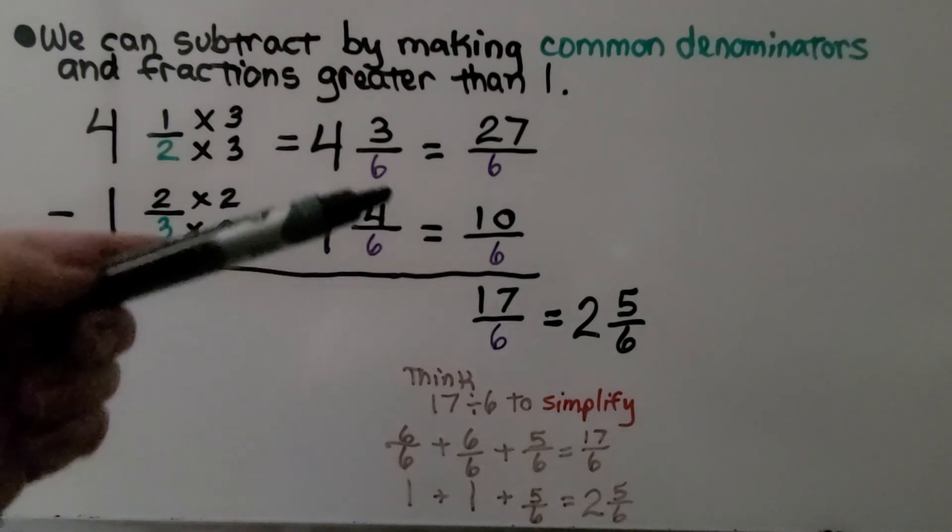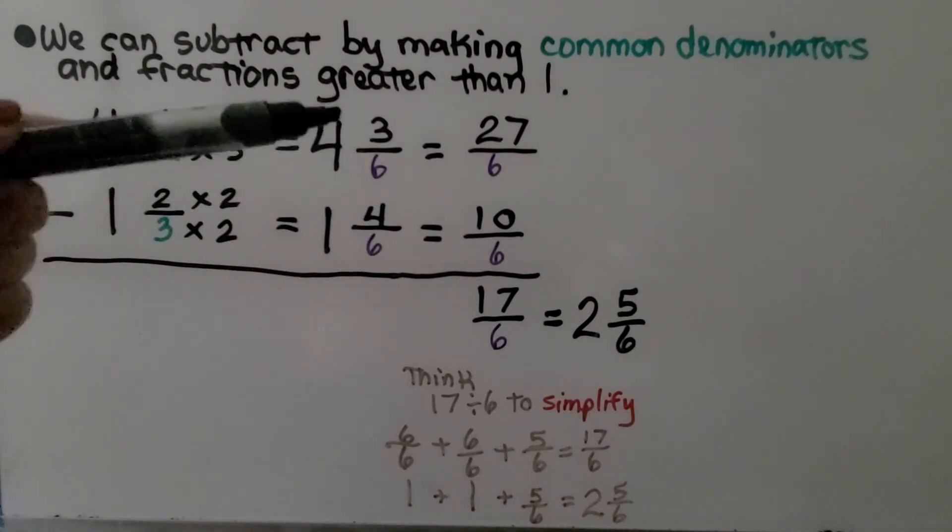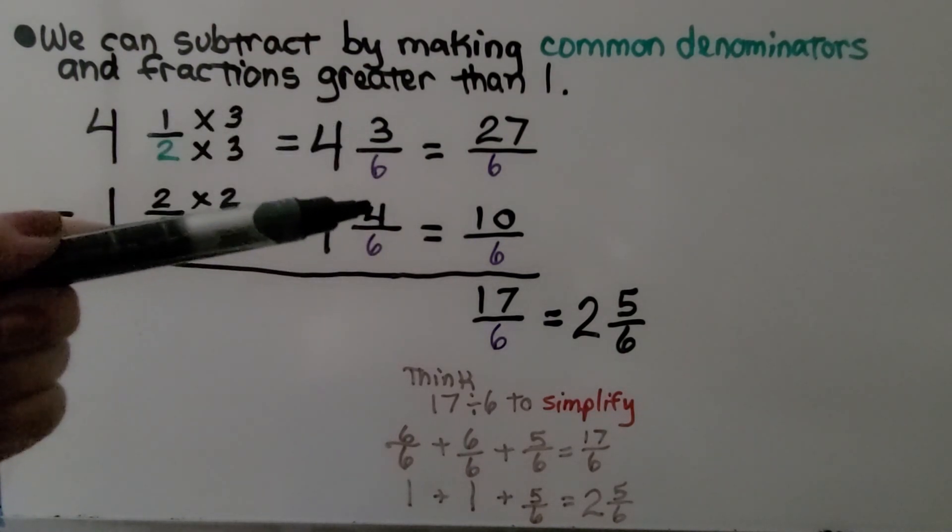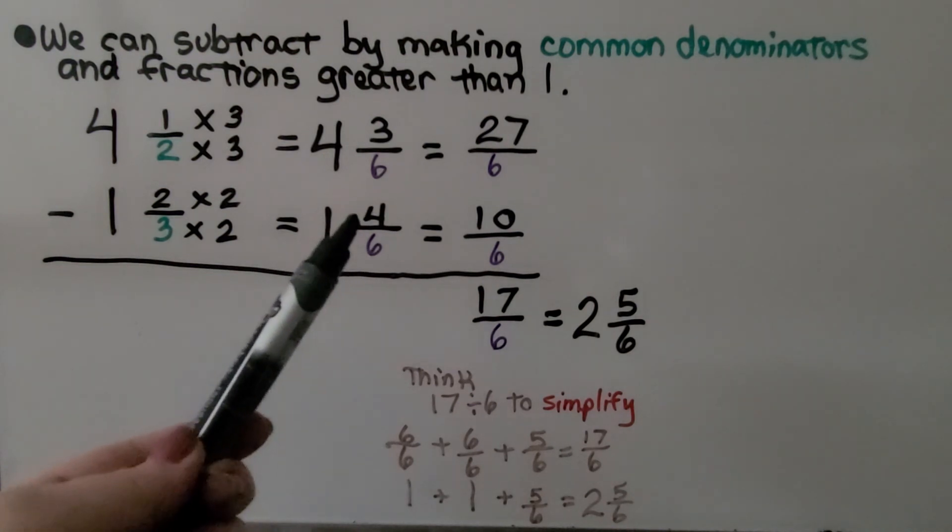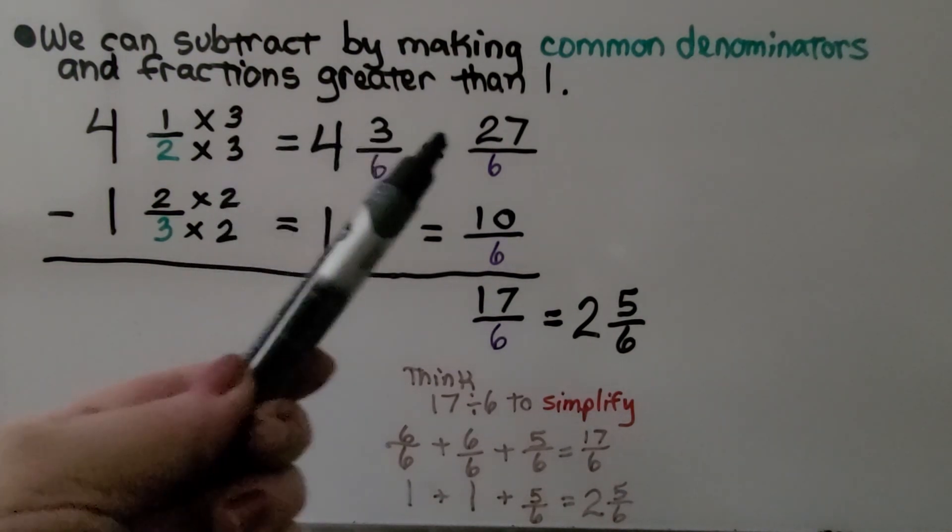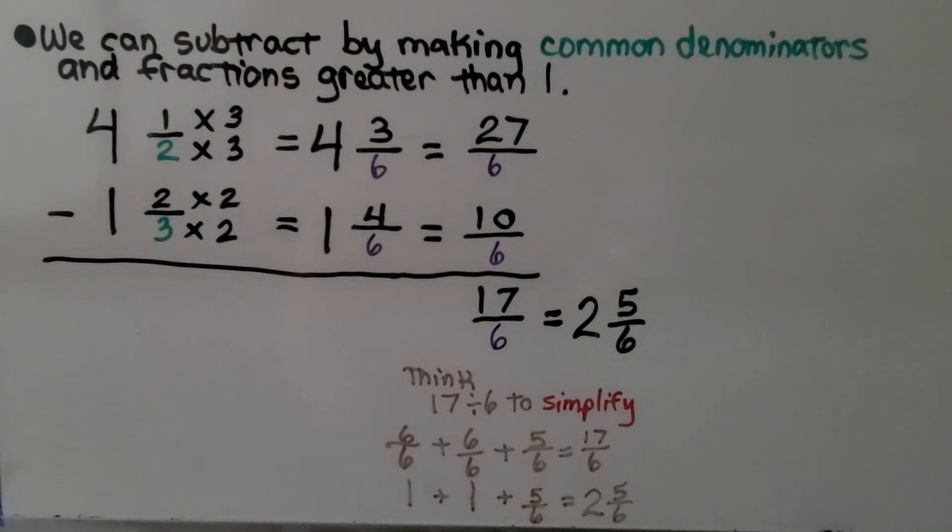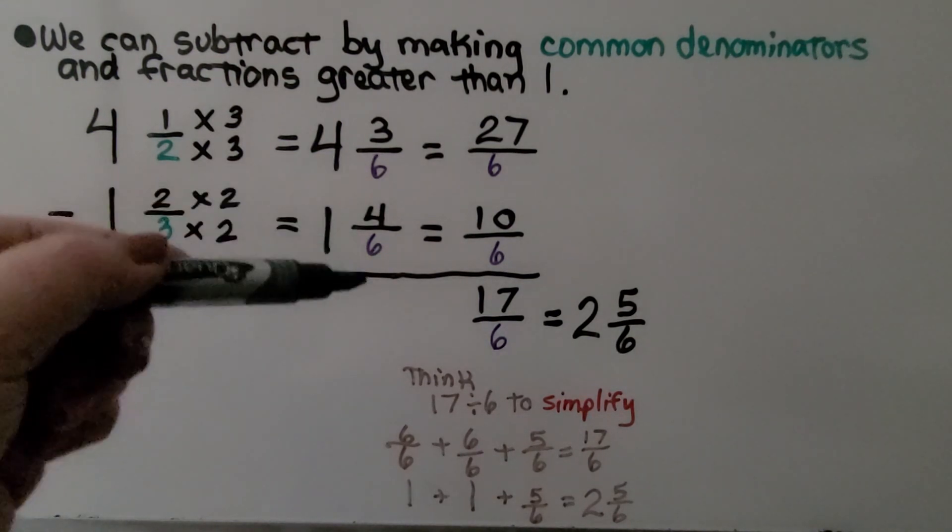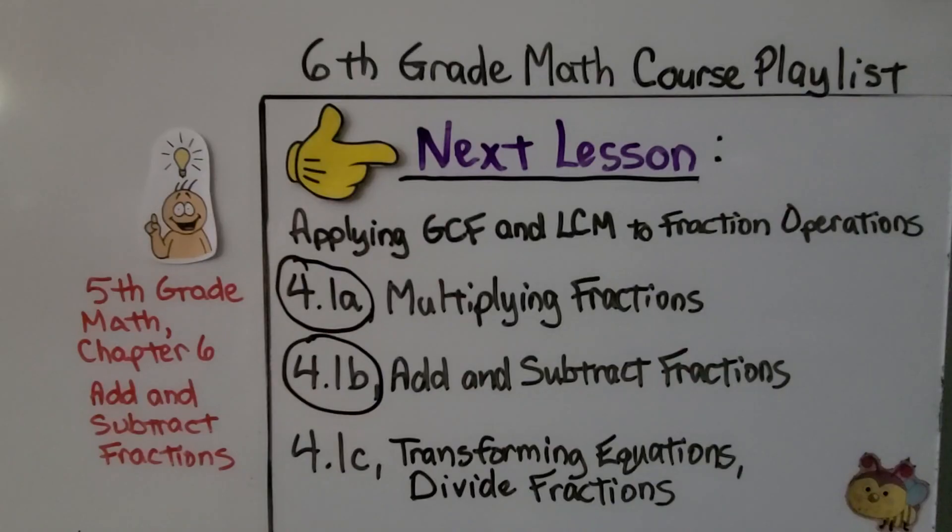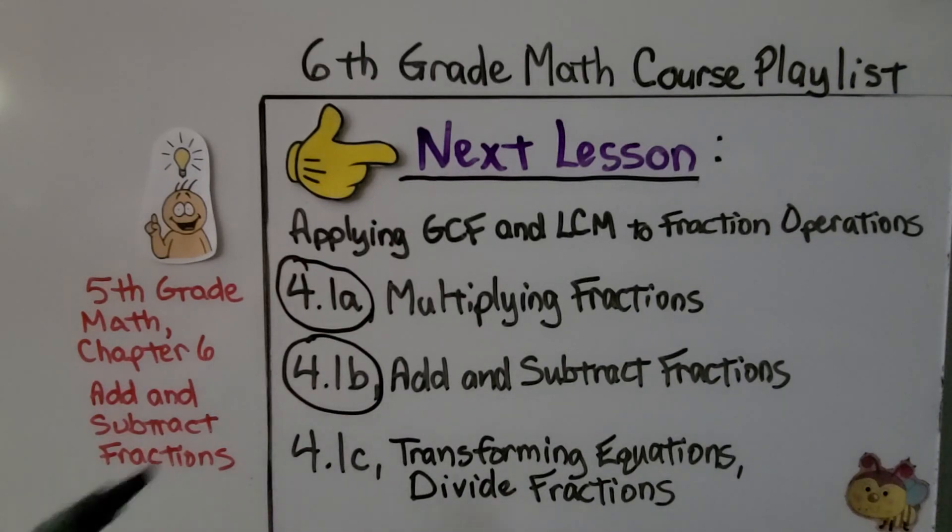So if you ever have a numerator that's not great enough to subtract the other numerator, try turning it into a fraction greater than 1 and then subtracting, as long as they have the same denominator. If you had any trouble with this adding or subtracting fractions, I'm going to have links to 5th grade math chapter 6 videos that can help you, where we first learned about adding and subtracting fractions. I even model how to do it.